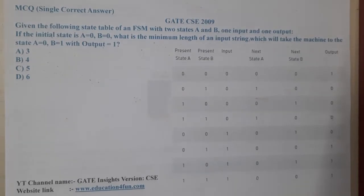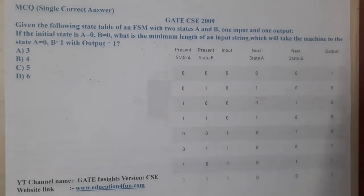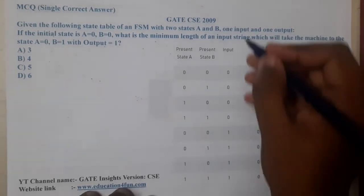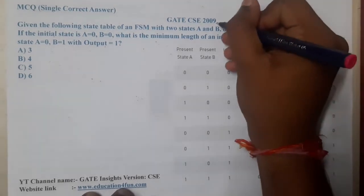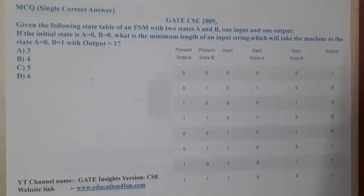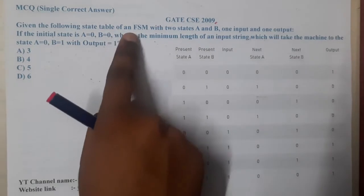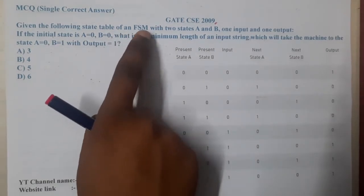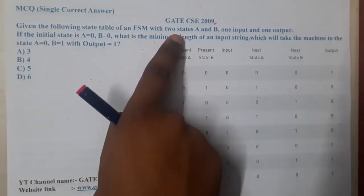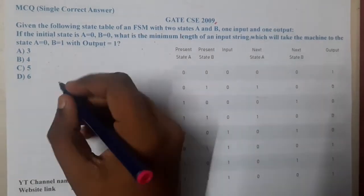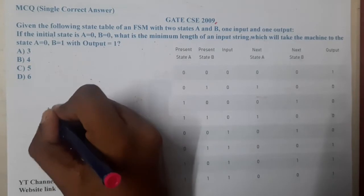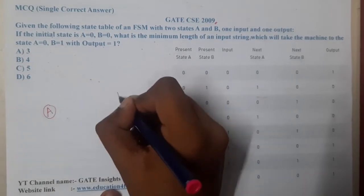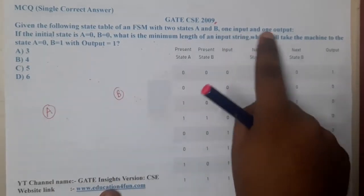Hello guys, we are back with our next lecture. This question belongs to GATE CSE 2009. The question is: given the following state table of a finite state machine with two states A and B, one input and one output.